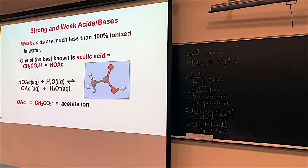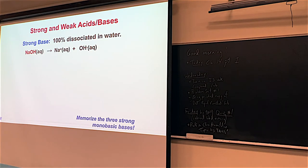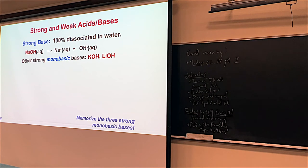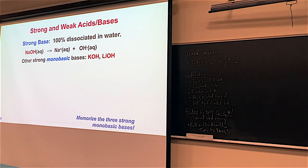Bases are the same kind of game — strong and weak. There are only a couple of strong bases. If you have a strong base, it dissociates 100% in water, so we use a single arrow. NaOH breaks down to Na⁺ and OH⁻, and that's one way — there's no going back to NaOH. There are only three strong monobasic bases: NaOH, KOH, and LiOH — sodium hydroxide, potassium hydroxide, and lithium hydroxide. Unless I say anything differently, all other bases we will consider weak.